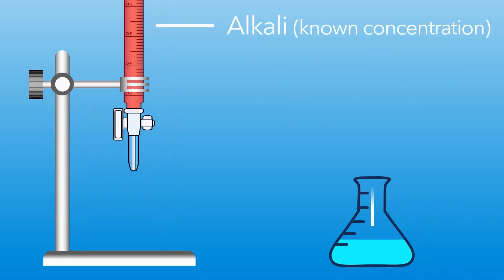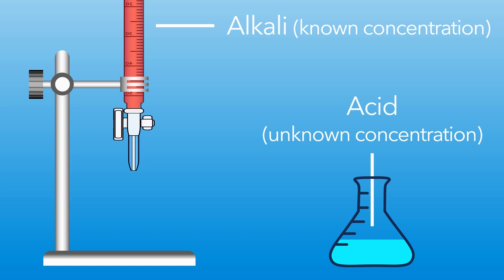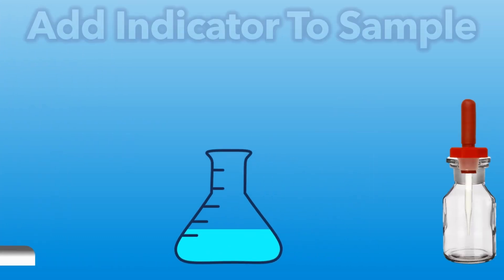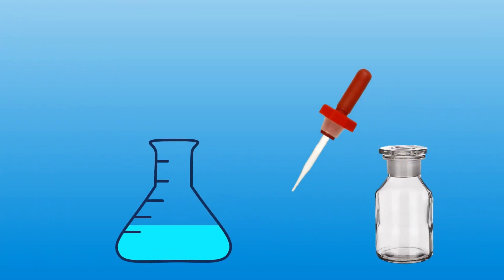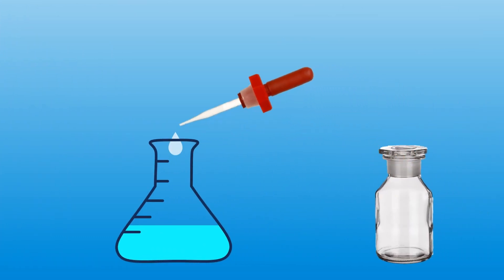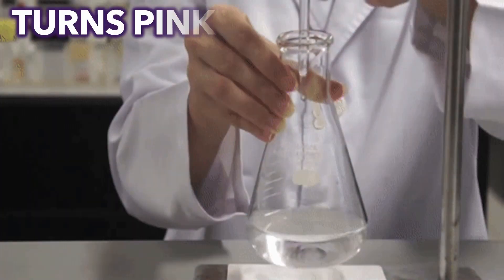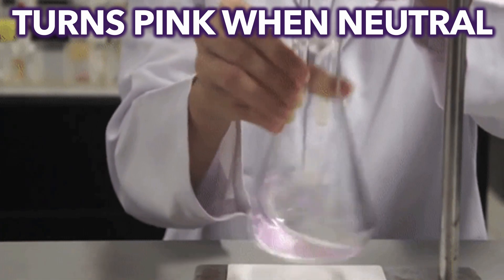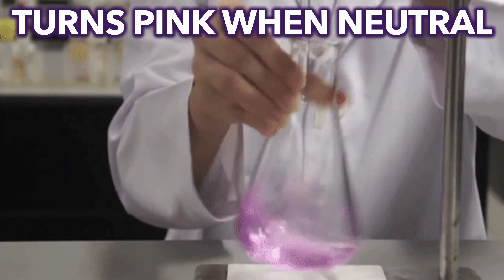Our alkali is now ready to neutralise our acid. But first we add several drops of indicator, such as phenolphthalein, which will turn pink when the acid has been neutralised.